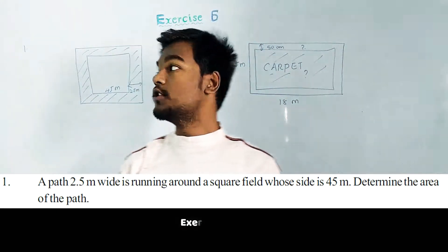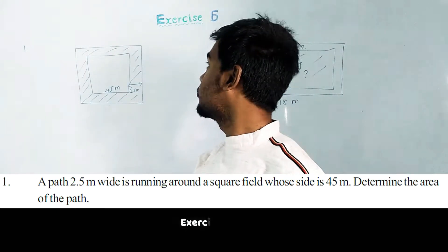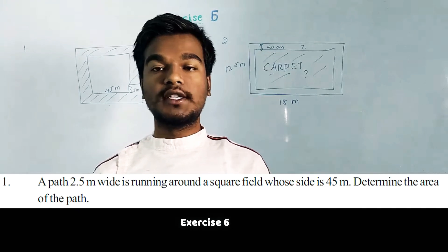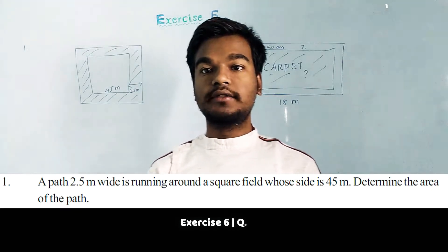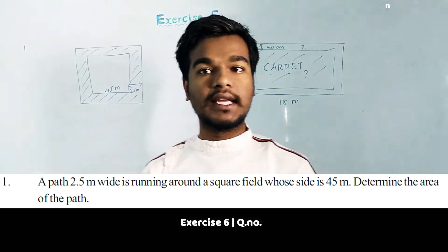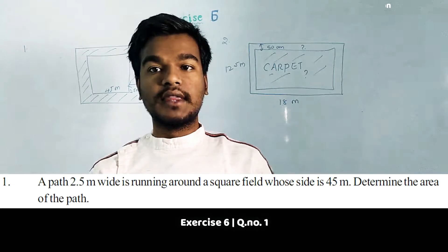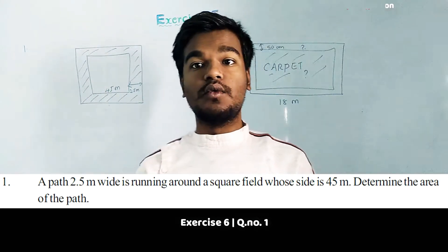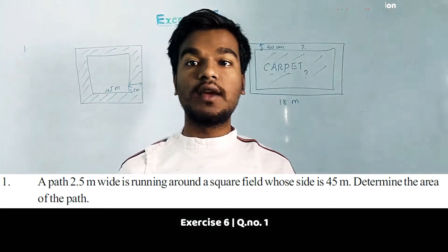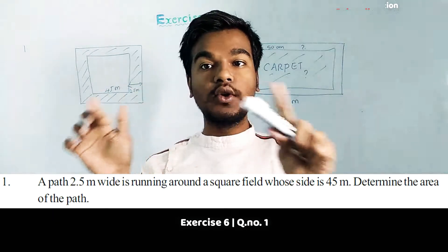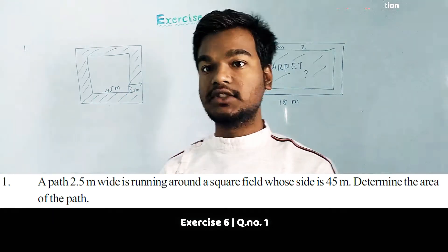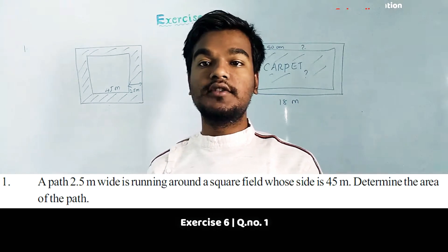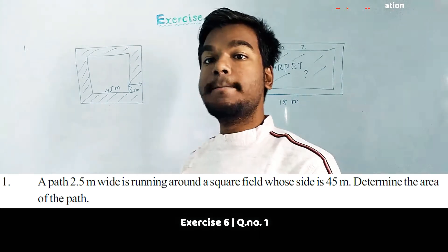Hello viewers, in this module we are going to discuss Exercise 6, first and second questions. The question is: a square field has a square-shaped path of 2.5 meters around it, with the square field having a side of 45 meters. We need to find out what is the area of the path.